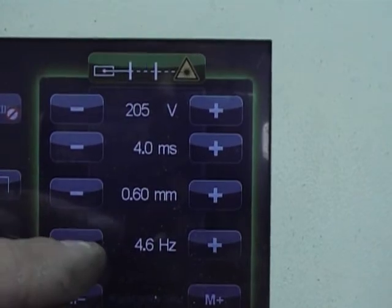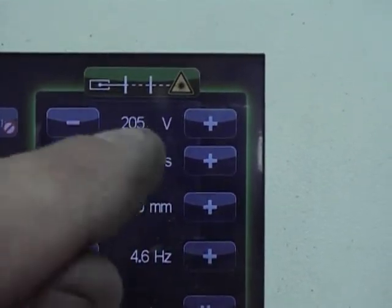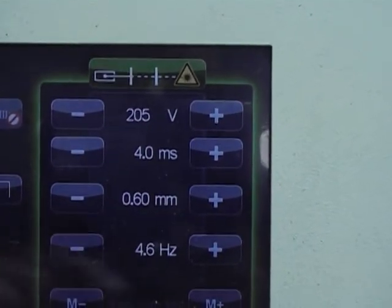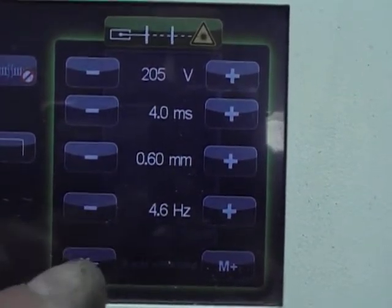This 4.6 right here hertz, that's how many shots it's going to do in a second. So it's going to go bam, bam, bam, bam. So that's your shots. Now this is the settings for 14 karat white gold in general.